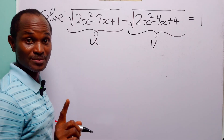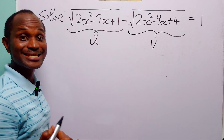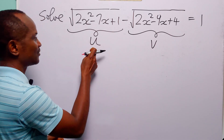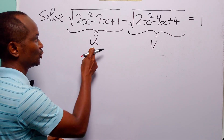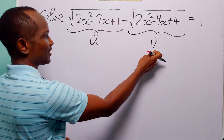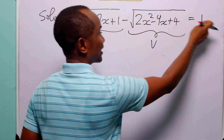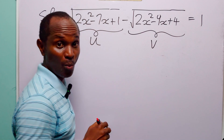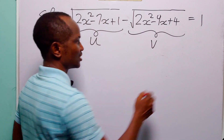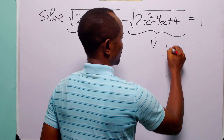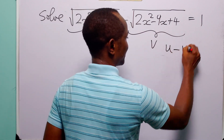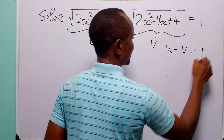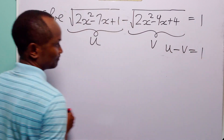And we are going to call this quantity v. Now with these two substitutions, you can see that the original equation is now u minus v is equal to 1.